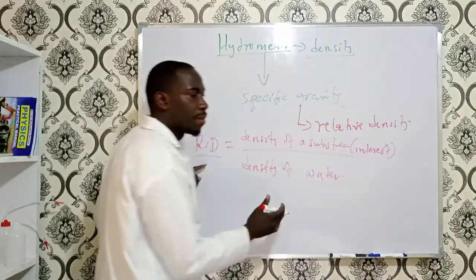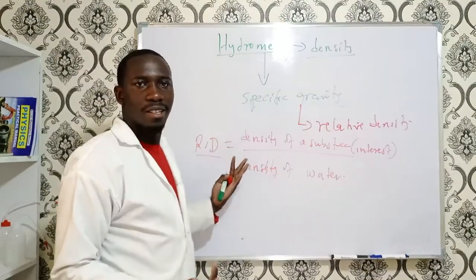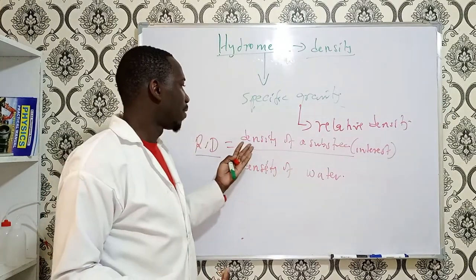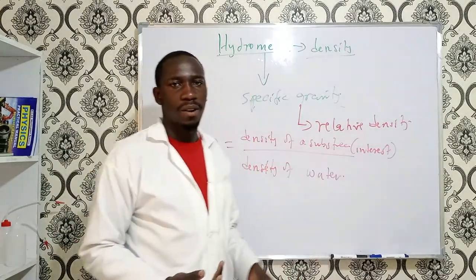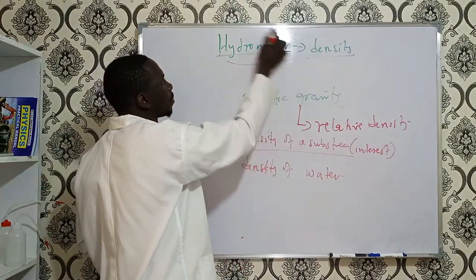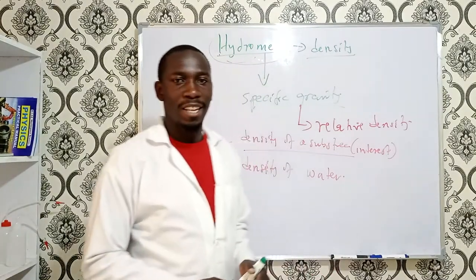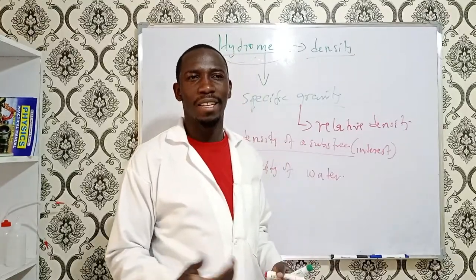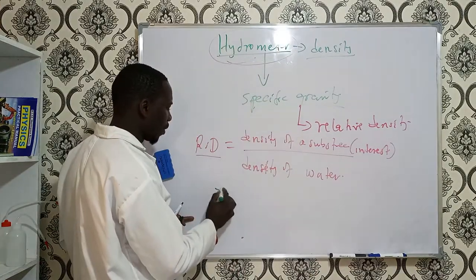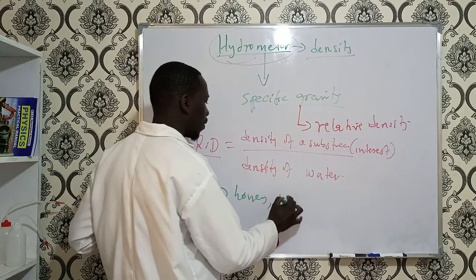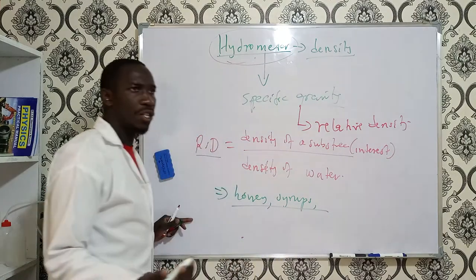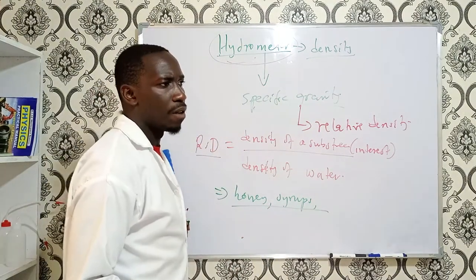Sometimes we don't know the relative density, and we also don't know the density of the substance we're looking for, which makes it difficult to use the formula directly. That is why we use the hydrometer. Hydrometers are widely used by producers of honey and syrups.